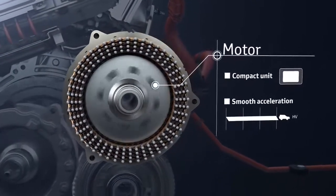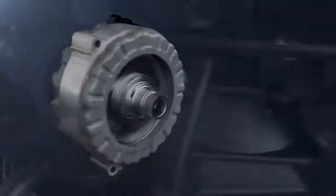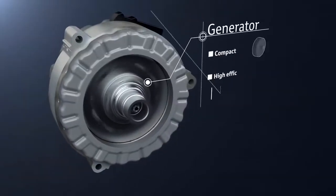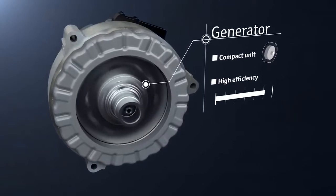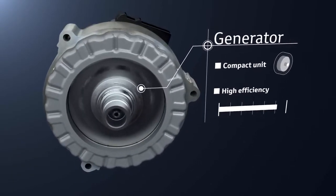To achieve smooth acceleration, the generator uses engine rotation to generate electricity, which is sent to the motor and drive batteries.